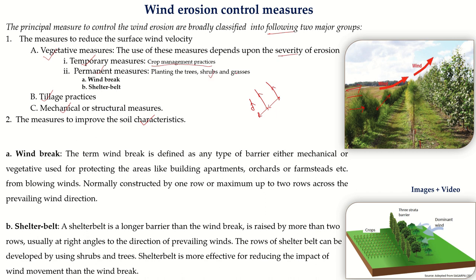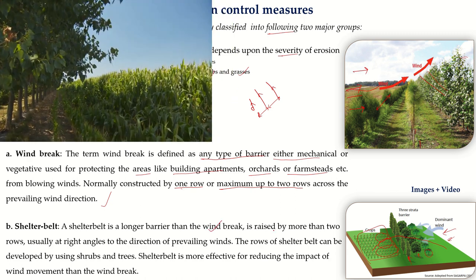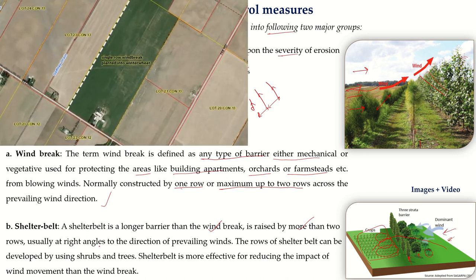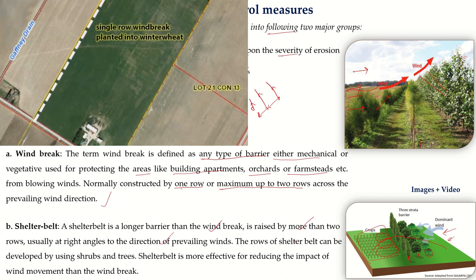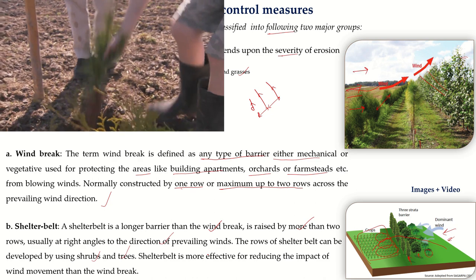Permanent vegetative measures include planting trees, shrubs, and grasses, broadly divided into windbreaks and shelter belts. A windbreak is any type of barrier — either mechanical or vegetative — used to protect areas such as buildings, apartments, orchards, or farms from blowing wind. Windbreaks are normally constructed using one or a maximum of two rows planted across the prevailing wind direction, acting as a fencing wall around the affected area.